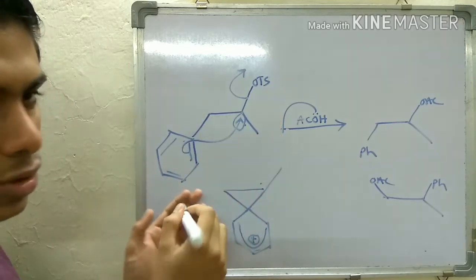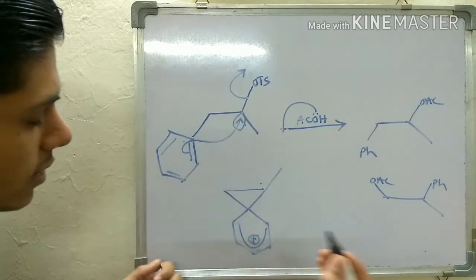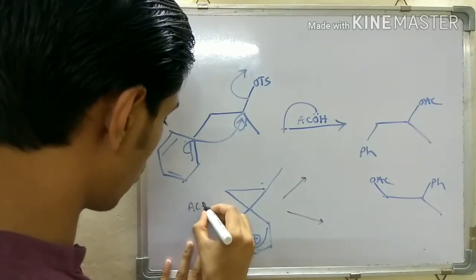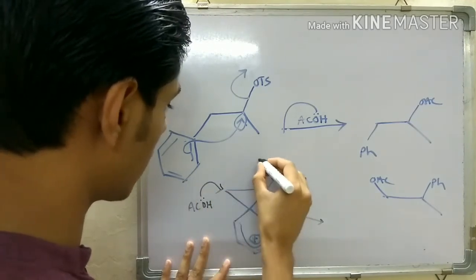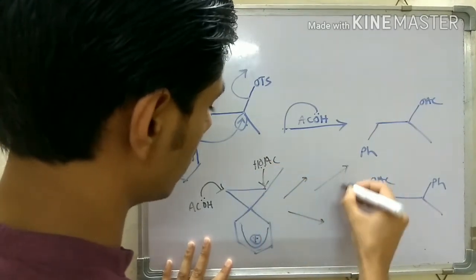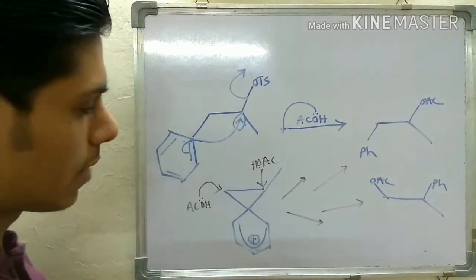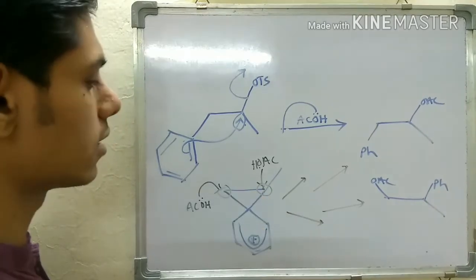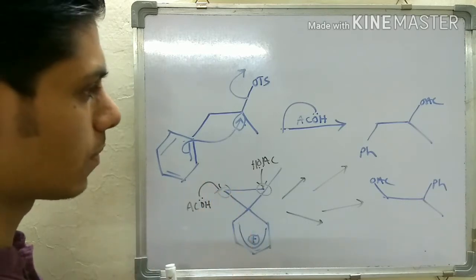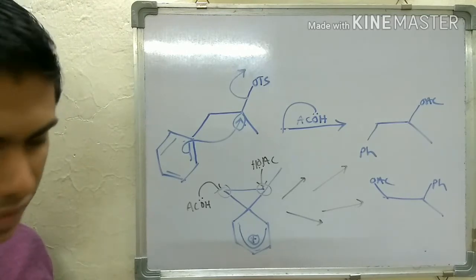Once you have this bridged intermediate, the acetic acid molecule can open it in two possible ways - it can attack here or it can attack there - and accordingly you will get these two products. The ratio will not be the same because one is a tertiary center and the other is a secondary center, but you get both products. This implies that the phenyl group can also participate in neighboring group participation.